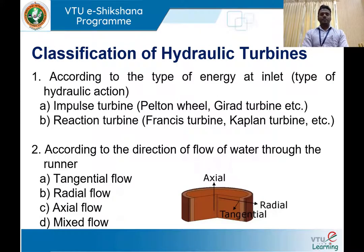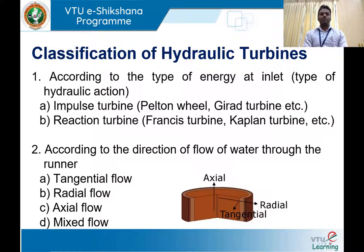Coming to the classification of hydraulic turbines, we consider several criteria. The first is the type of energy available at the inlet of the turbine. The turbine shaft is coupled to a generator shaft; rotation of the turbine blade or wheel sets the turbine shaft in motion, the generator shaft rotates at the required RPM, and electricity is generated. Water possesses kinetic energy as well as potential energy, that is pressure energy.